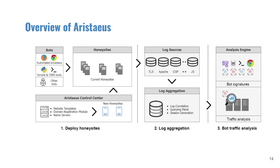Here's the overview of ArrayStayers. It consists of three parts. The first part is honey site management, which provides flexible honey site creation. The second part is log aggregation — it has a central server which periodically collects log files from honey sites. The last part is bot traffic analysis, which consists of a series of analyzing scripts to extract information from log files and identify bot activities.